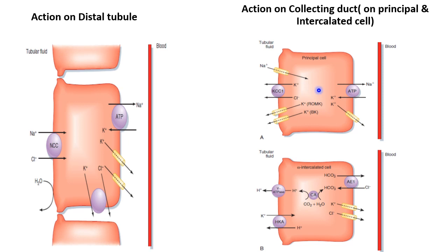After sodium enters the tubular cell, aldosterone also increases the activity of the sodium-potassium ATPase pump, which helps reabsorb sodium from the tubular cell into the blood while taking in a large amount of potassium. This potassium is then secreted from the tubular cell by two processes: one through the potassium-chloride symporter into the lumen, and another through the renal outer medullary potassium channel, which also helps potassium secretion at the luminal surface.